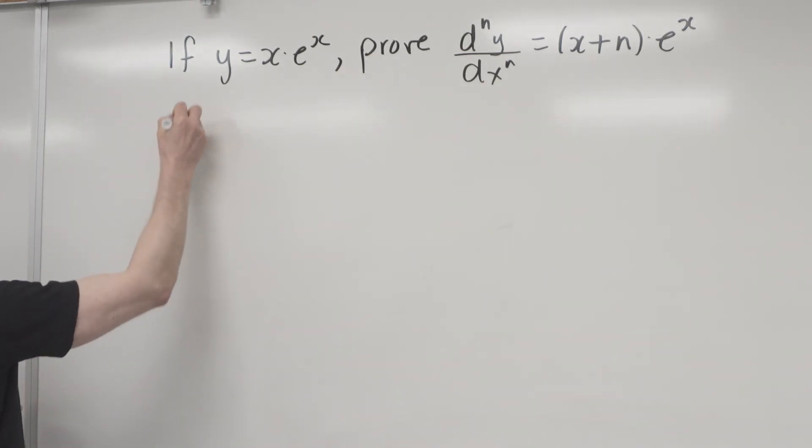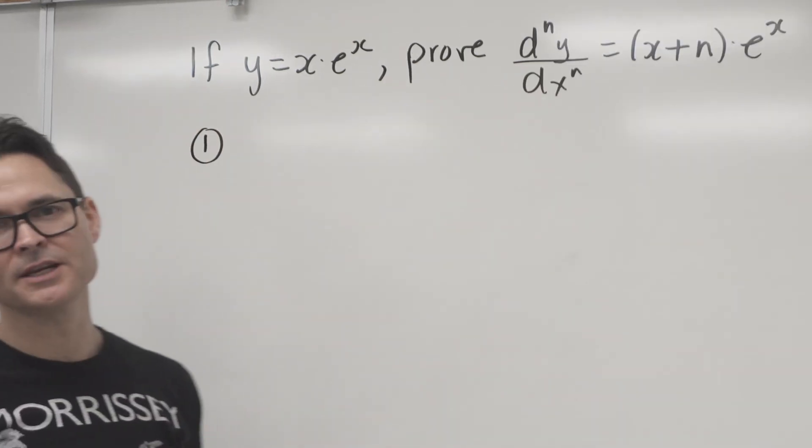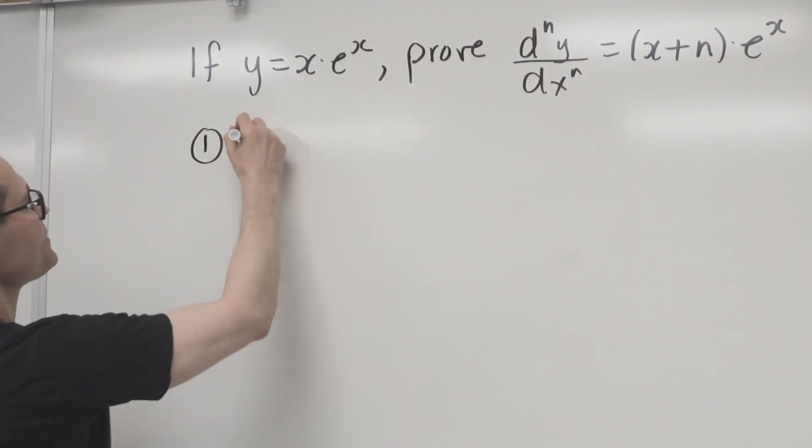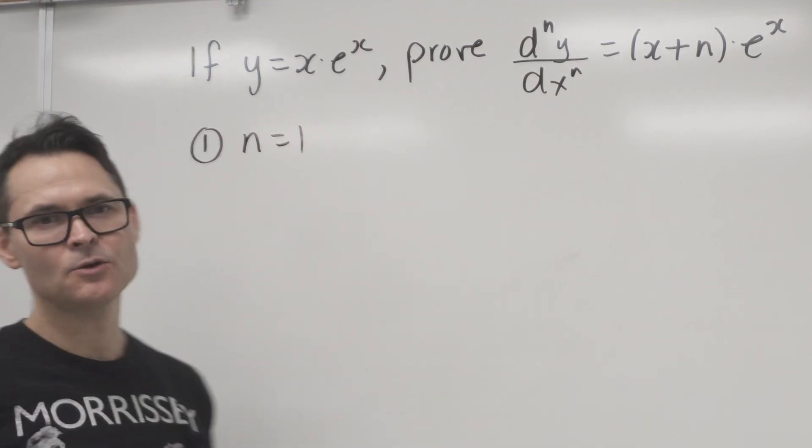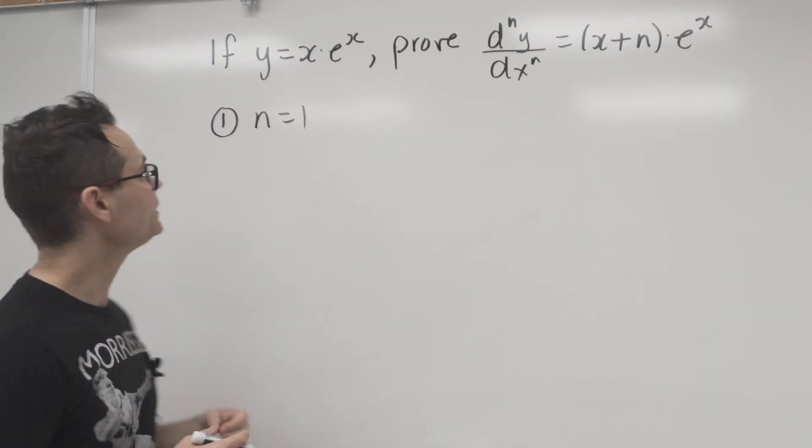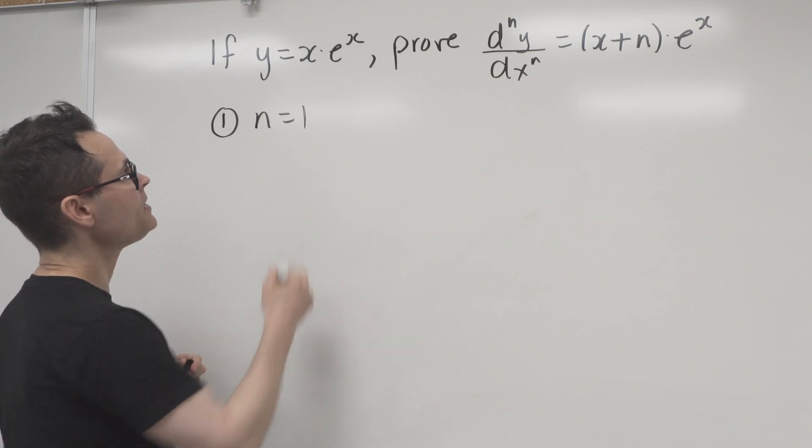So let's go. First step is always to show that it's true for at least one case, right? And so we'll just take the easy case n is equal to 1. By the way, you don't have to use 1. It can be any number, really. So n is equal to 1, that means the first derivative.